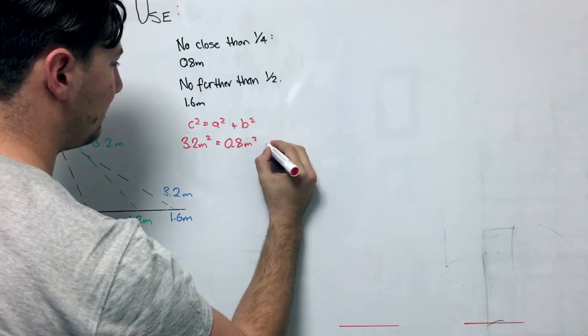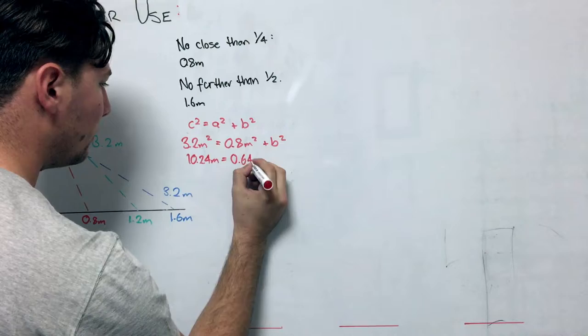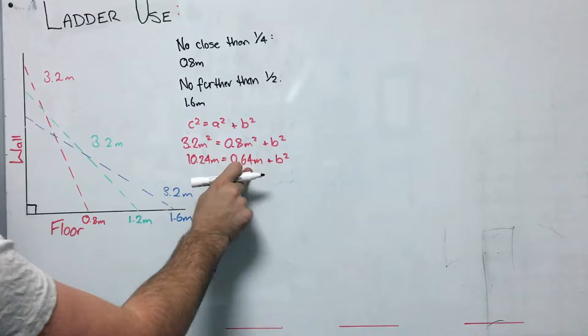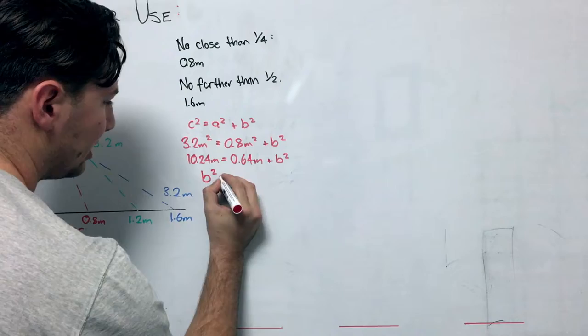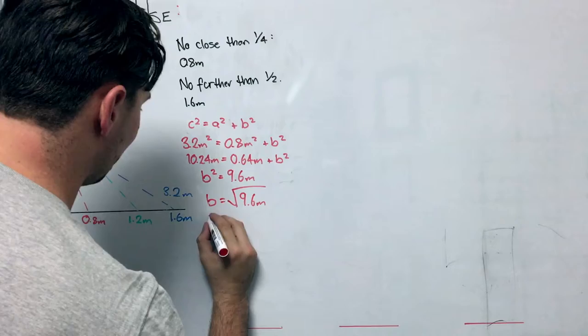So solving this, we get 10.24 metres equals 0.64 metres plus our B² value, which we're solving for. Now taking 0.64 away from 10.24, we are going to get 9.6. And so we have B² is equal to 9.6 metres. Now to solve for B, we'll just take the square root, which will be √9.6 metres, and so B will equal 3.1 metres.